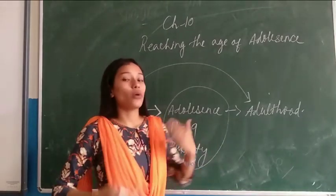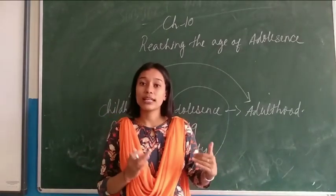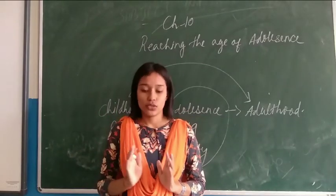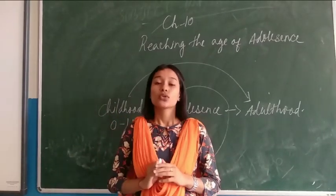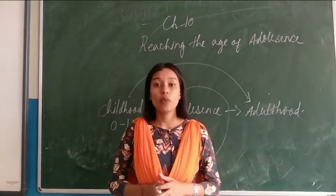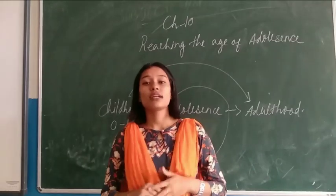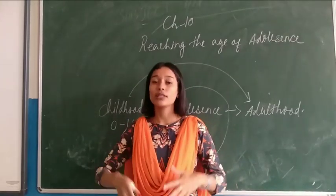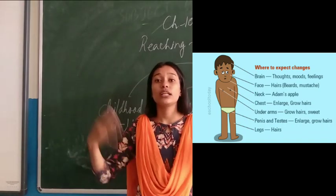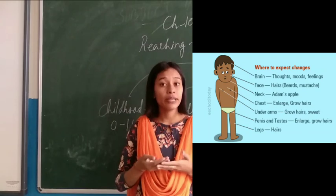Puberty starts when our body starts changing, and it will end when our reproductive parts are fully mature. The first change is an increase in height - our height will increase suddenly. The bones of our arms and legs will elongate, and as a result, our height will increase.